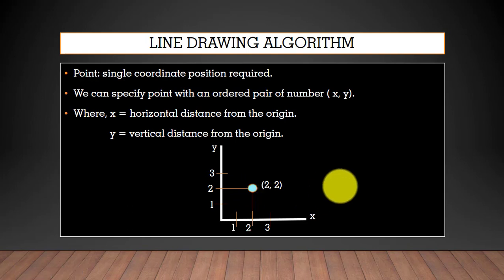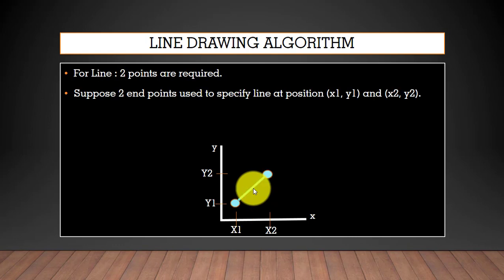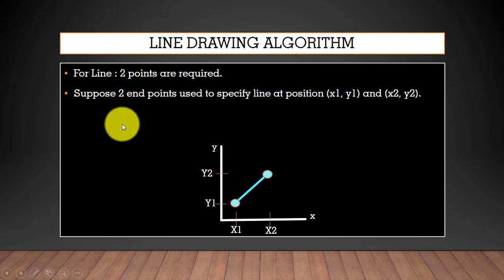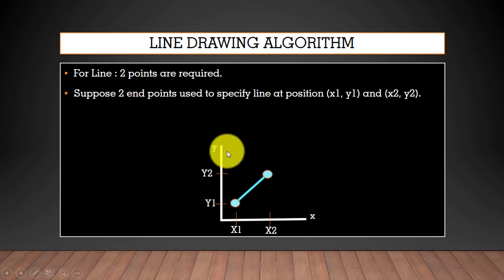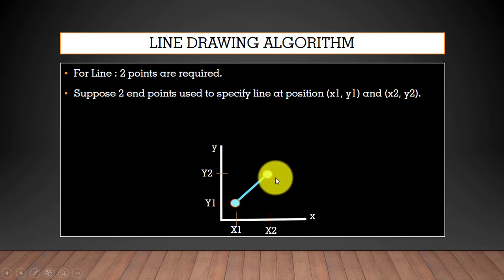For example, suppose we have a point (2, 2) — this axis is for Y and this is for X, and this is the position of that point. We can specify any point with an ordered pair of numbers. Now for a line, we need two points. Suppose we have two endpoints x1,y1 and x2,y2 — we use these two endpoints to specify the line's position on the plane. You can see the position of the first point x1,y1 and then x2,y2.